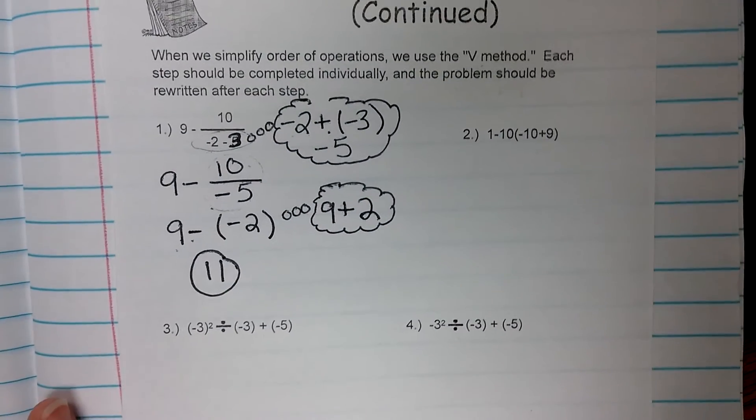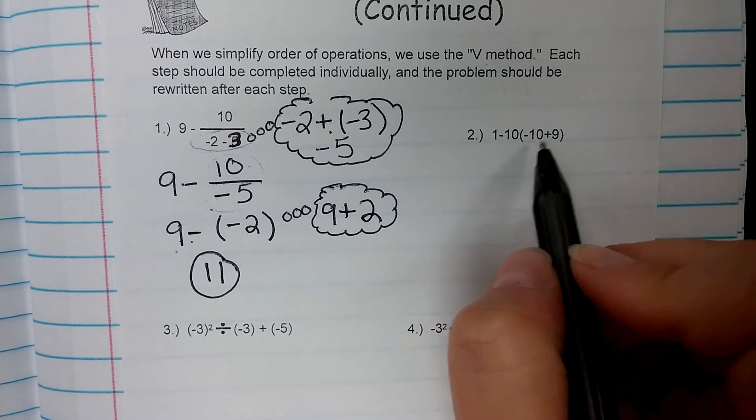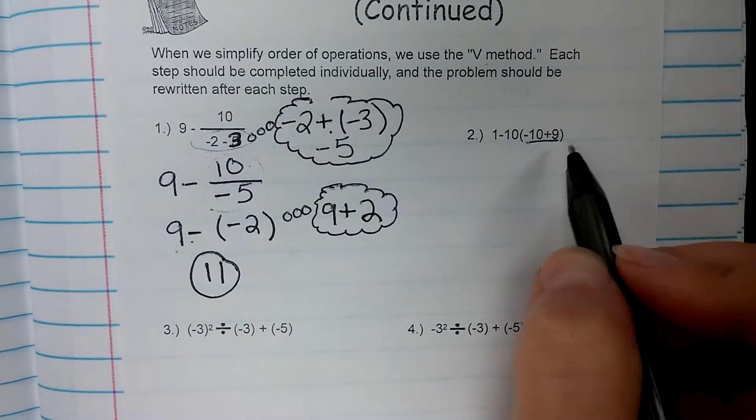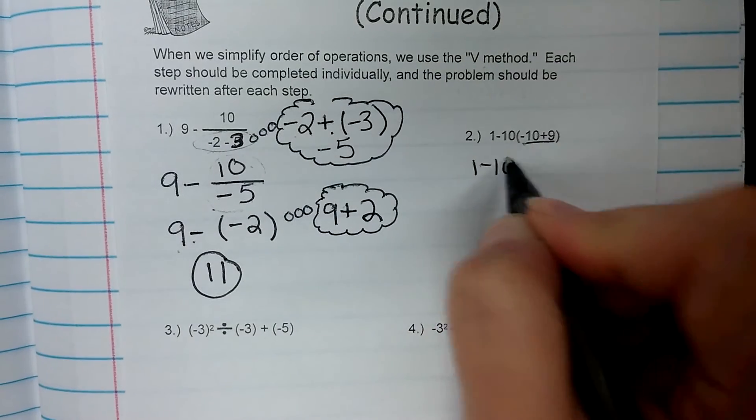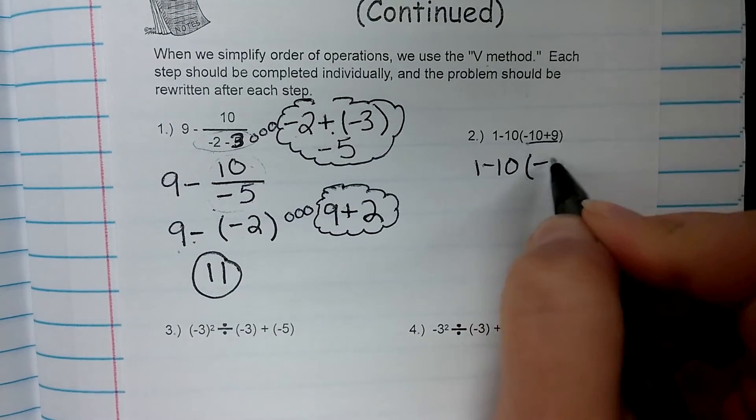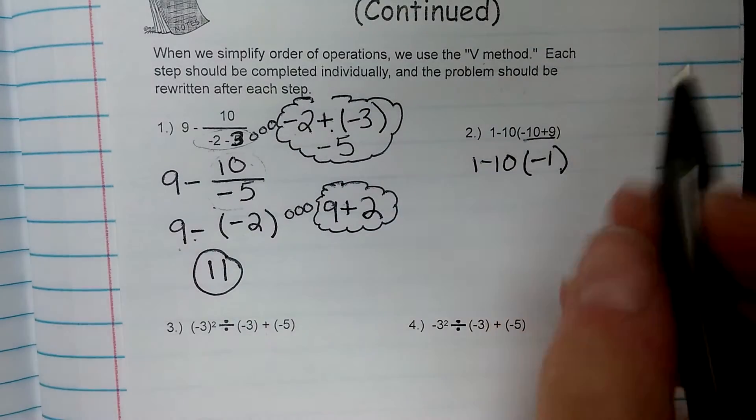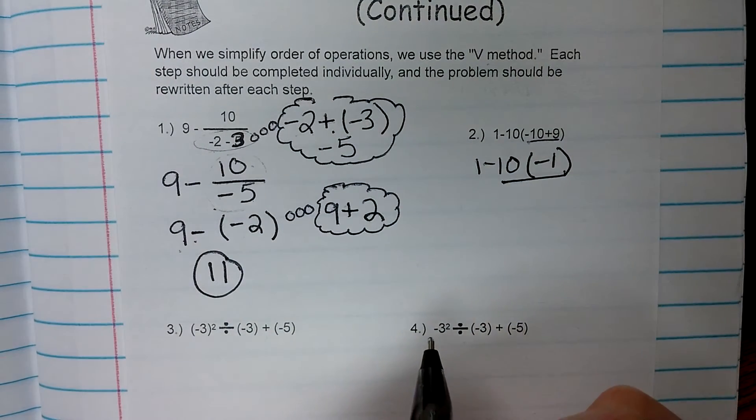Example number 2. We do have some grouping symbols. We've got negative 10 plus 9. So if we add those two together, negative 10 plus 9 gives us a negative 1. Our next step is going to be multiplication. So we multiply 10 times negative 1.